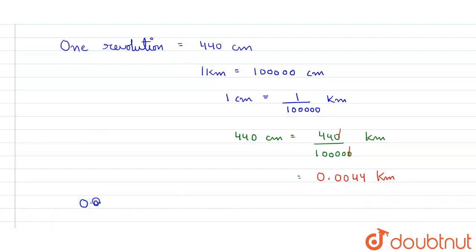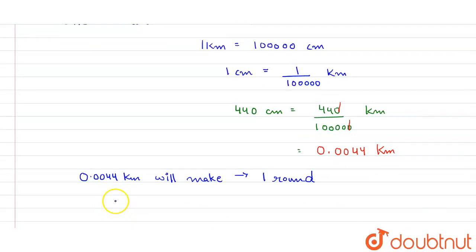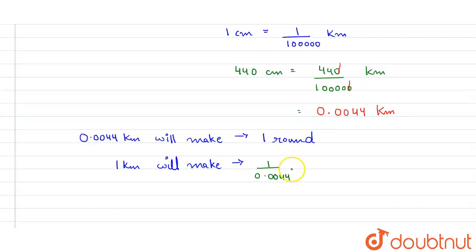So 0.0044 kilometer will make one round or one revolution. Similarly, one kilometer will make 1 upon 0.0044 rounds. This is unitary method.